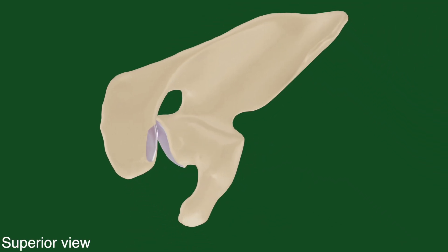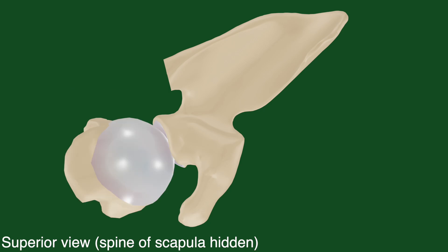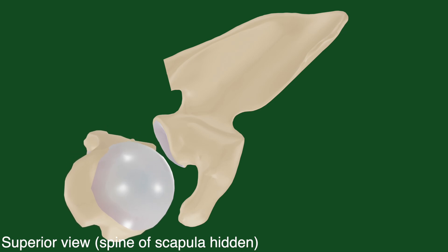One of the reasons why anterior dislocations are much more common is because of the physiological position of the glenoid, which is naturally anteverted, meaning that its face is pointing anteriorly, which predisposes the humerus to slide in that direction.